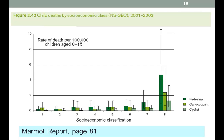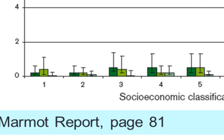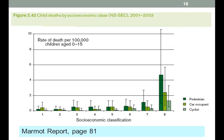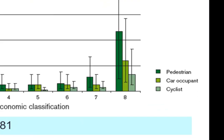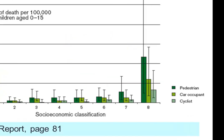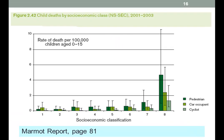We're back with slide 16, which looks at child deaths by socio-economic class. Socio-economic classifications are on the bottom — up this end is the more affluent, towards this end is the less affluent. There are three indicators here: deaths of pedestrians, deaths of car occupants, and cyclists. So we'll drill down and have a look at these groups.